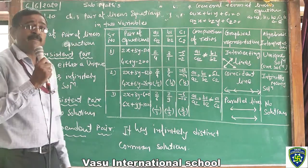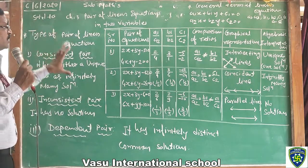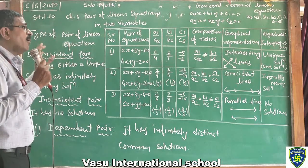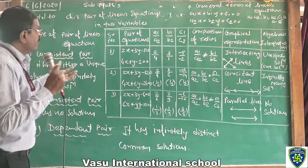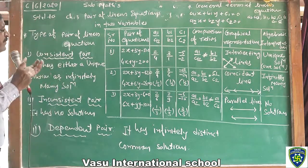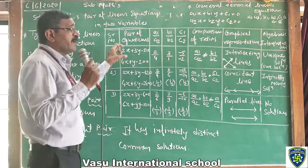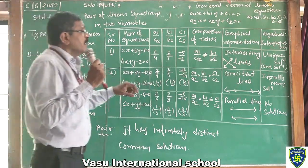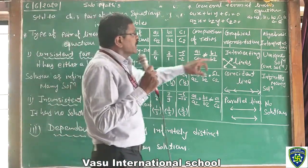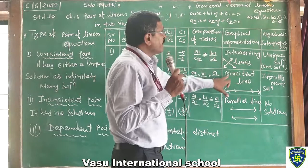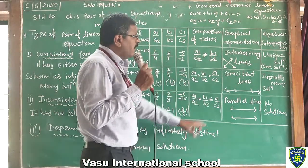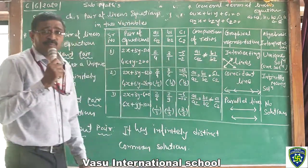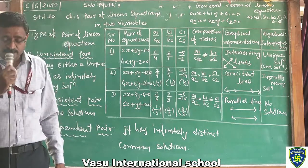Read this table carefully and remember all the values — which type of pair gives intersecting lines, coincident lines, or parallel lines when we draw the graph. Om Namah Shivaya. Thank you.